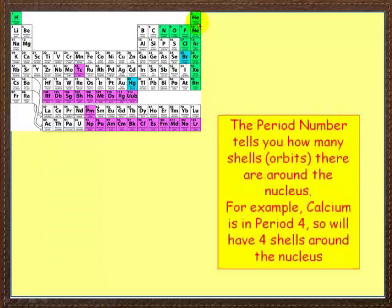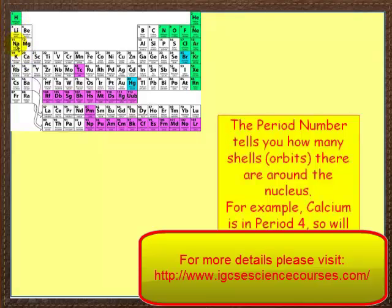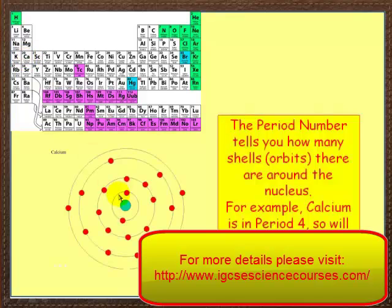Now, the period number here tells you how many shells or orbits there are around the nucleus. This has got 1 orbit, 2 orbits, 3, 4, and so on. So calcium is over here. It is in period 1, 2, 3, 4. So it tells us that calcium has got 4 shells around the nucleus. And here it is, 1, 2, 3, 4. It's got 20 electrons, we can tell that from its atomic number. 2 go there, 8, 8, 2. And again, I do prefer this way of doing things, I really do. 2, 8, 8, 2 is its configuration.